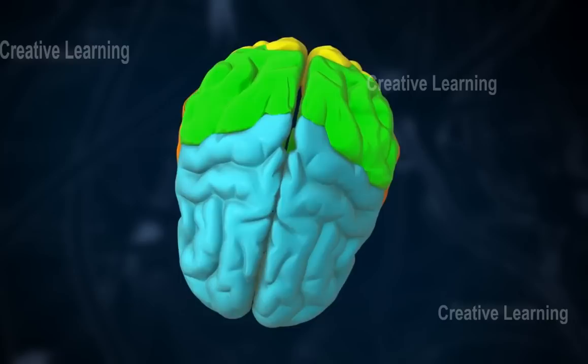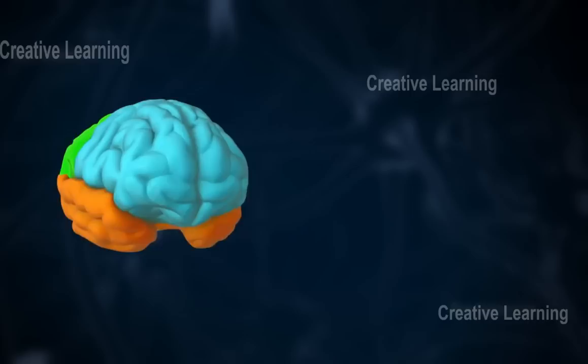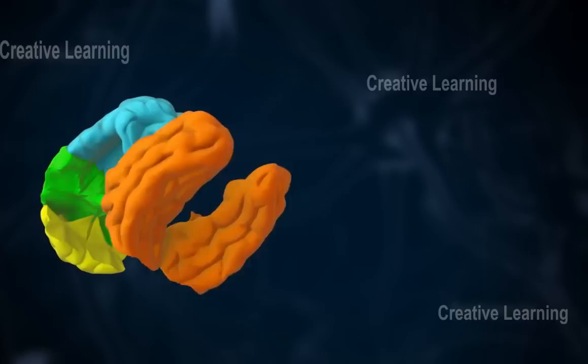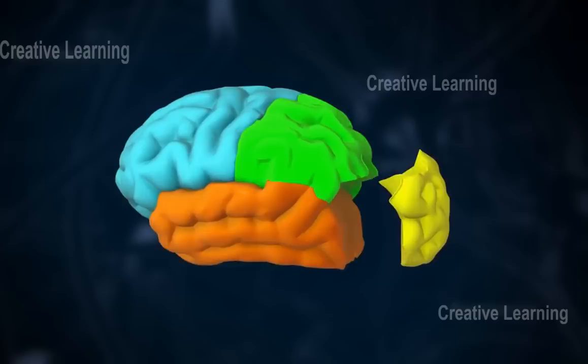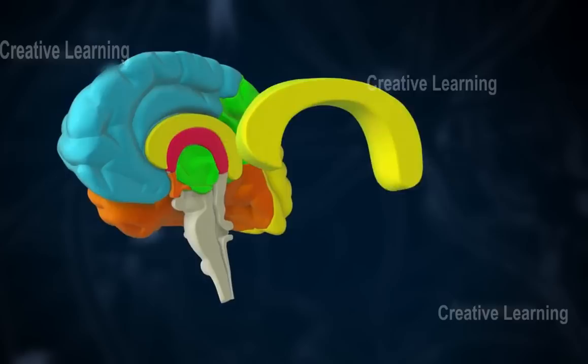The cerebrum is the largest part of the brain and is divided into left and right hemispheres. Each is composed of a frontal, temporal, parietal, and occipital lobe. The two hemispheres are connected by a nerve tract called the corpus callosum.